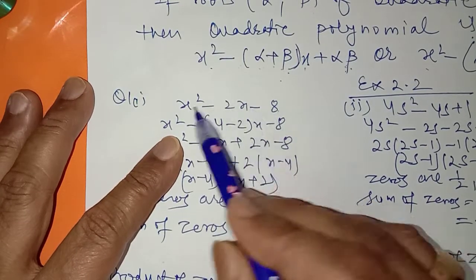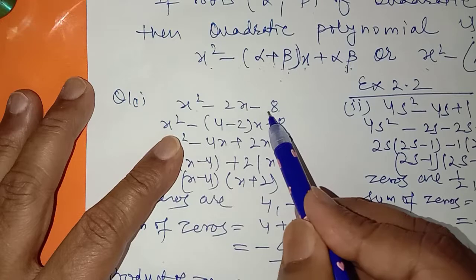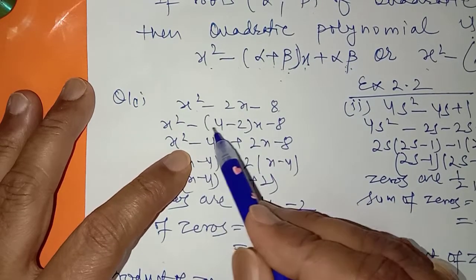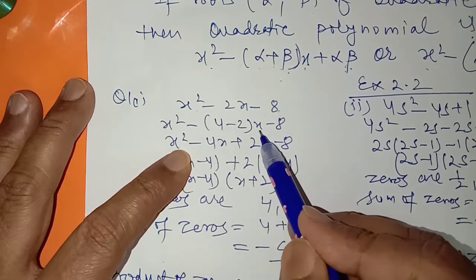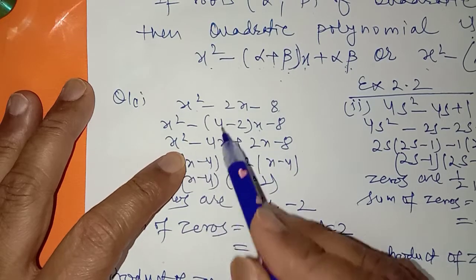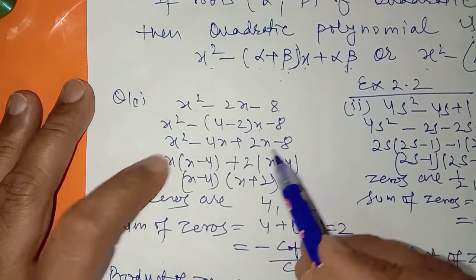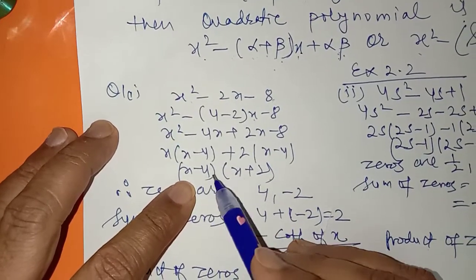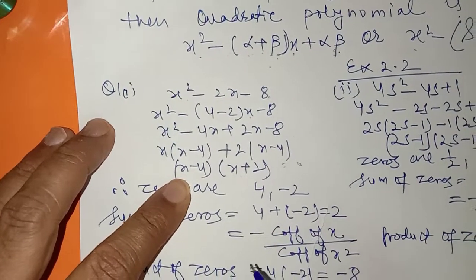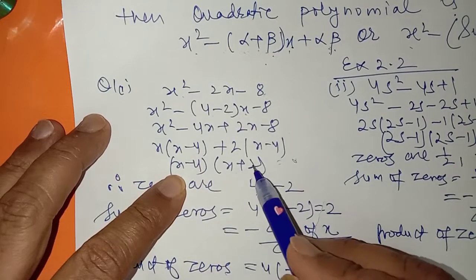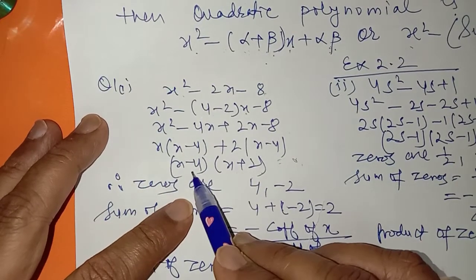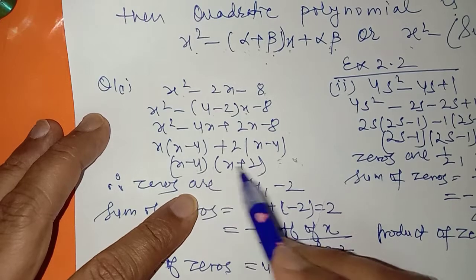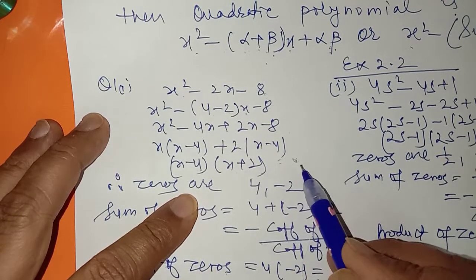Split the middle term: multiply to get minus 8, and subtract to get 2, giving 4 and minus 2. Break and open: minus 4x plus 2x. So it will be x squared minus 4x plus 2x minus 8. Factorize this. The zeros are obtained by setting each factor equal to zero, giving x equal to 4 and x equal to minus 2. So the zeros are 4 and minus 2.